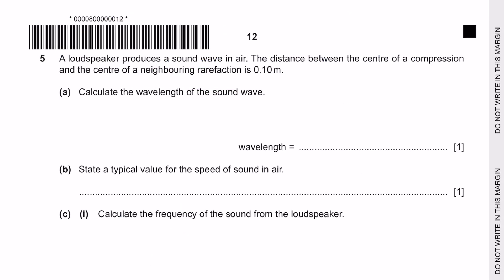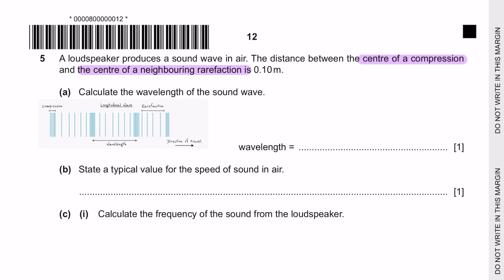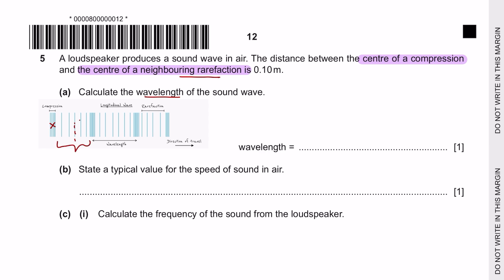Question 5: a loudspeaker produces a sound wave in air. The distance between the centre of a compression and the centre of a neighbouring rarefaction is 0.1 metres. Sound is a longitudinal wave — the regions where lines are closer together are compressions and where they are further apart are rarefactions. A complete wavelength goes from one compression to the next. Since the compression-to-rarefaction distance is only half a wavelength, the full wavelength is 0.2 metres.